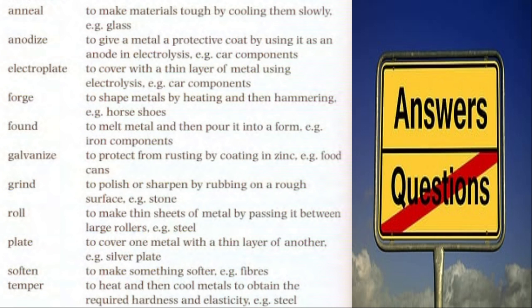Grind means to polish or sharpen by rubbing on a rough surface — example: stone. Roll means to make thin sheets of metal by passing it between large rollers — example: steel. Plate means to cover one metal with a thin layer of another — example: silver plate. Soften means to make something softer — example: fibers. Temper means to heat and then cool metals to obtain the required hardness and elasticity — example: steel.